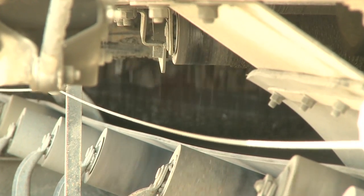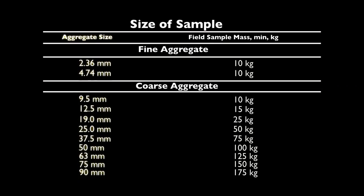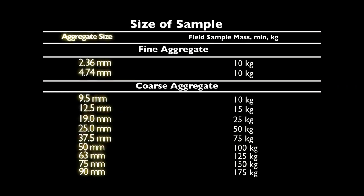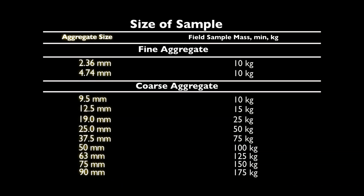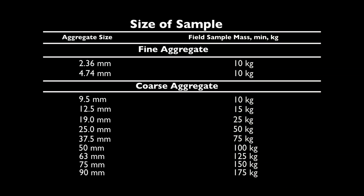Sample sizes for routine quality tests are found in Table 1. The column on the left represents the nominal maximum size of the aggregate specified. The column on the right represents the minimum size of the field sample in kilograms. For a fine aggregate sample, the size of the field sample is always a minimum of 10 kilograms. As you can see here, the field sample size increases with the nominal maximum size of the aggregate.